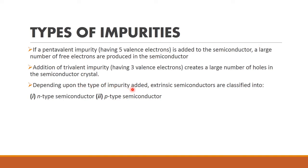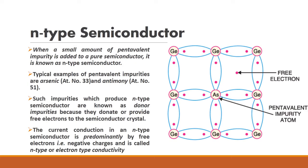Depending upon the type of impurity added, extrinsic semiconductors are classified into two: N-type semiconductor and P-type semiconductor. In N-type semiconductor, a pentavalent impurity is added to a pure semiconductor. Taking germanium as the semiconductor, if we add arsenic — a pentavalent element with five valence electrons — four of arsenic's valence electrons bond with germanium, leaving one extra free electron. This free electron is responsible for conduction, which is why adding pentavalent impurity creates an N-type semiconductor.